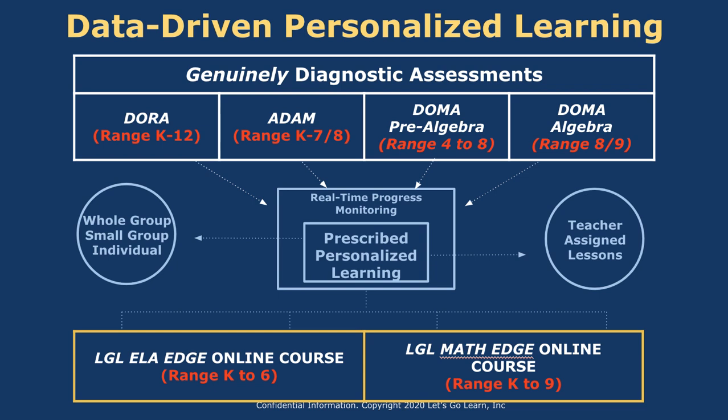Let me talk about our assessments. First, there's DORA, which has a K–12 range in reading. ADAM has a K–7/8 range. DOMA Pre-algebra has a range of about fourth grade to eighth grade, and DOMA Algebra covers algebra one, which is around eighth and ninth grade. You take these assessments, get the data, and use it to know exactly how to teach a student — whether working with them directly or turning on automated courses called ELA Edge and Math Edge. ELA Edge has a K–6 instructional range, and Math Edge has a K–9 range. If a student is beyond foundational reading or foundational math — say they're already working on algebra 2 or trigonometry — the Edge courses won't be available or appropriate for them.